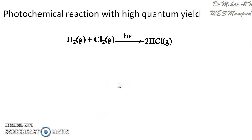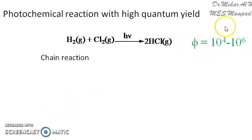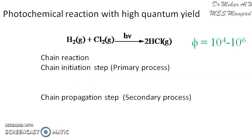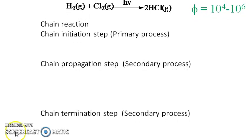Let us take the example of formation of HCl gas from hydrogen and chlorine. When we look at the mechanism, we can see that it involves a chain reaction, and the phi value is 10⁴ to 10⁶ — a very high quantum yield. So for every photon of light absorbed, a large amount of HCl is produced. This reaction follows a chain reaction having three basic steps: the chain initiation step, the chain propagation step, and the chain termination step. The chain initiation step is the primary process; the propagation and termination steps are the secondary process.